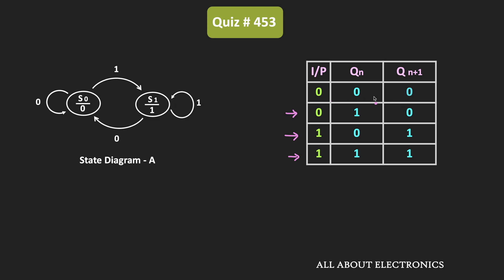As you can see from the state table, when the input of the flip-flop is equal to zero, then in the next state its output will remain zero. And when the input is equal to one, then irrespective of the present state, its output will remain one. So we can say that the given flip-flop is the D flip-flop, because in the D flip-flop, when the input is zero the output is zero, and when the input is one the output is one. That means the first state diagram is of D flip-flop.